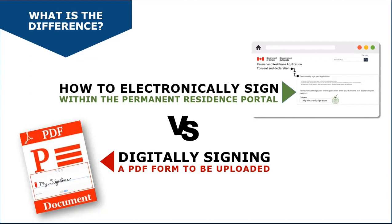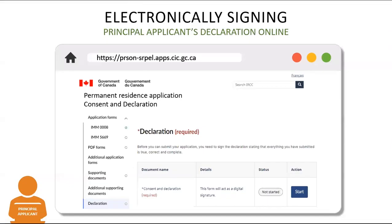We will begin by taking a look at how an invited refugee, also known as the Principal Applicant, will electronically sign their declaration form online from within the Permanent Residence Portal. A Principal Applicant who has the language skills and access to reliable internet can be invited to the online application to fill out their own forms.